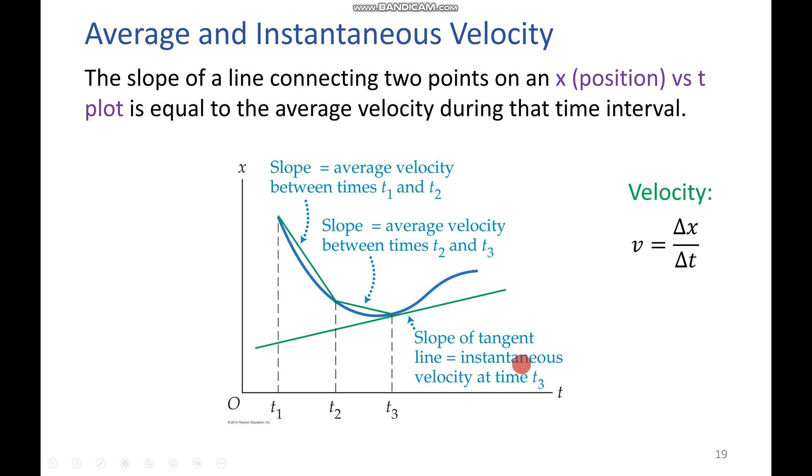Instantaneous velocity is a bit different. We want to know the velocity at a given instant. To do this, we draw a line that is tangent to the curve of the graph, like right here. This means that it would only touch the graph once, at the instant that we want to know our velocity, which here would be at our t3. The slope of this line right here will be the instantaneous velocity at the x, or the time value of our graph.